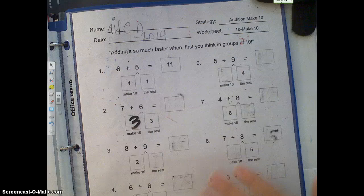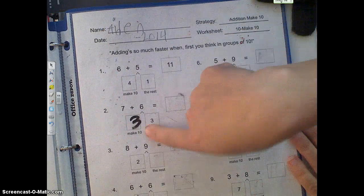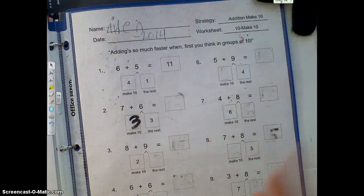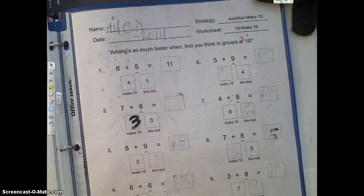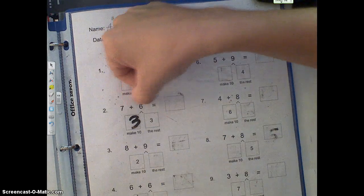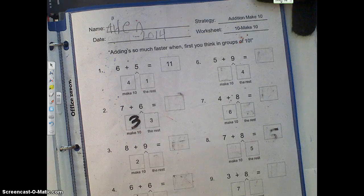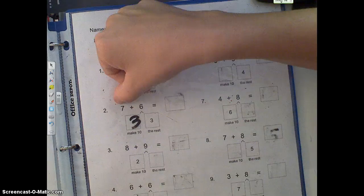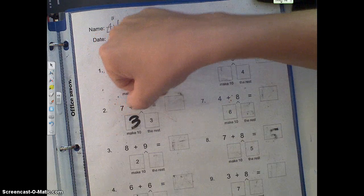Now, the reason we make 10 is because we're trying to figure out in our brain what's the easier way to add these two numbers together. So we're adding 7 plus 6, but 7 plus 6 is a hard number to add, you have to kind of think about it. So an easier way to think about it is by making 10. So 7 plus 3 equals 10, and then we need to figure out how much is left over.